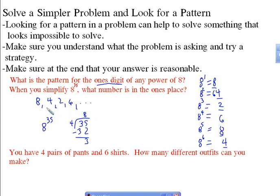It doesn't matter how many complete sets of 4 we go through, because we're going to end up starting back again at the beginning. So I just need to say: I go through the cycle 8 full times, and then I have 3 remaining. That puts me at position 3 in the pattern — 8, 4, 2 — so 2 is going to be the digit in the 1's column. And that's all you're being asked.